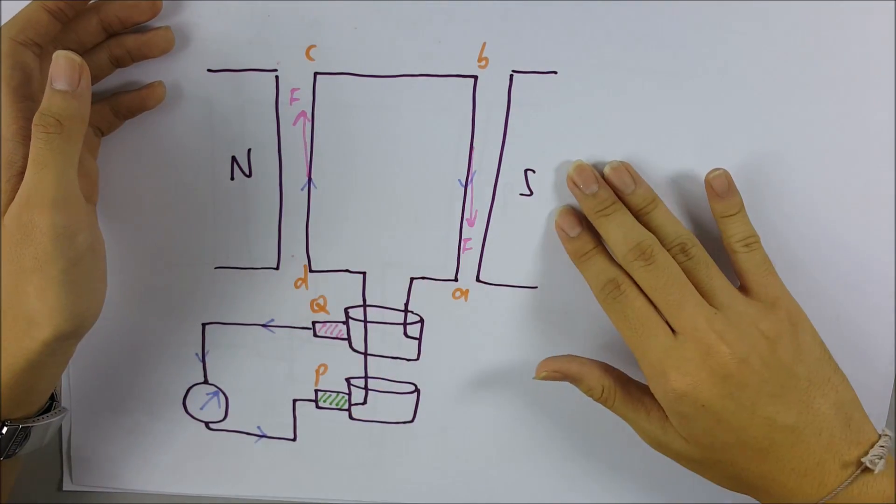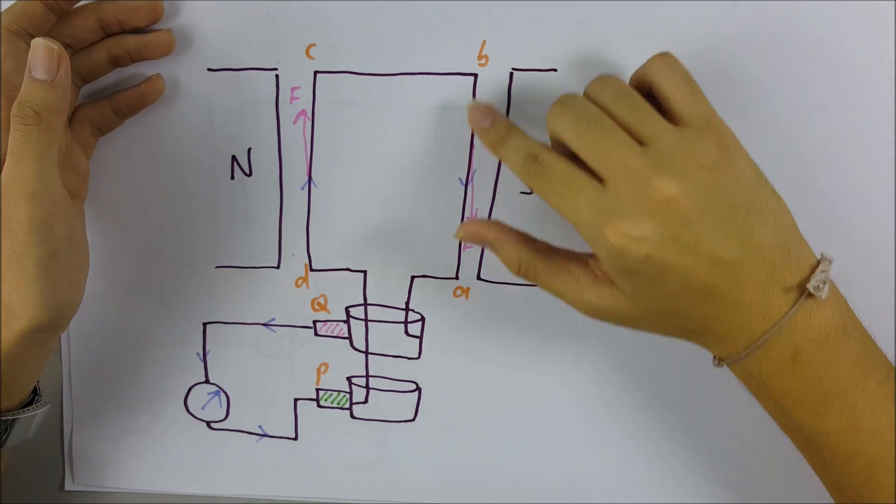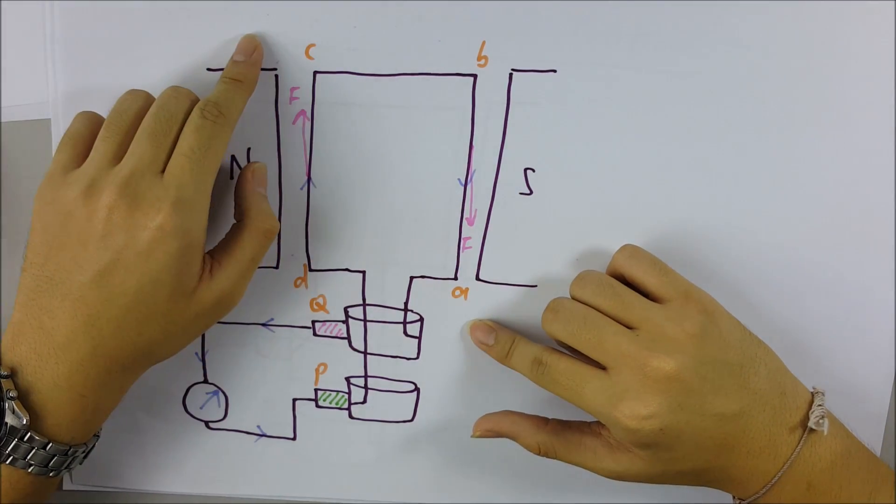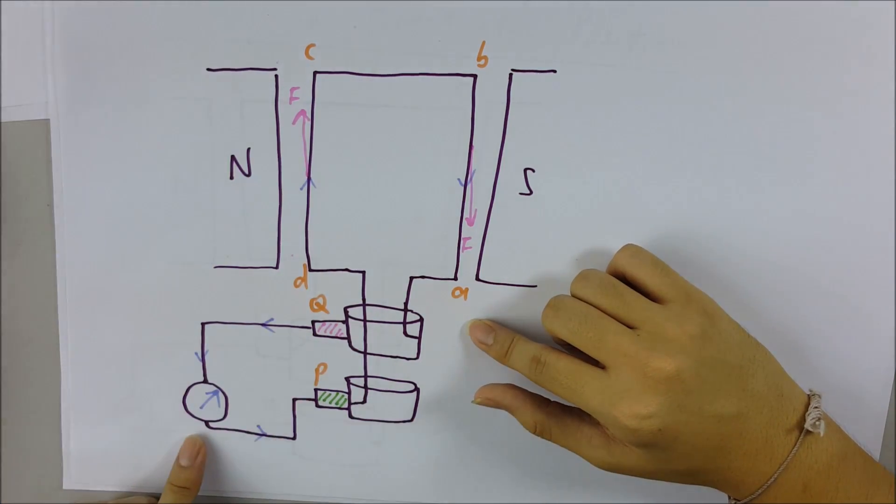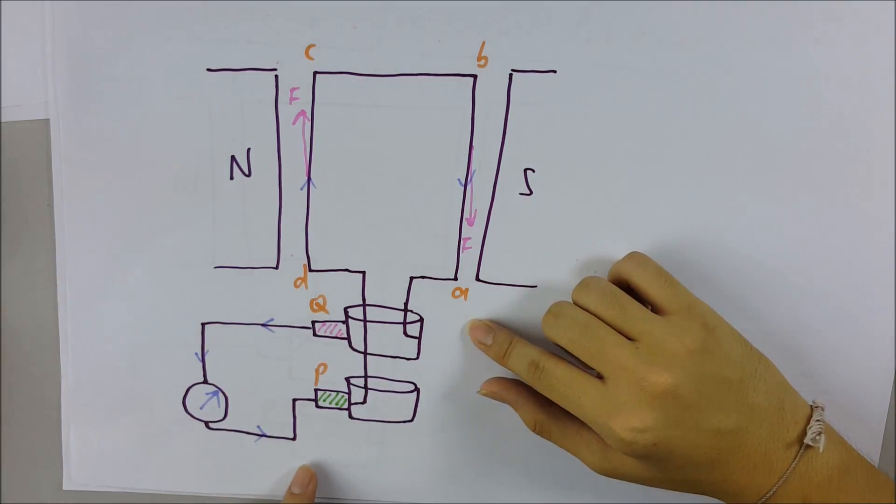The current now flows from B to A and from D to C. In the external circuit, the current flows from brush Q to brush P, and the direction of the current is reversed.